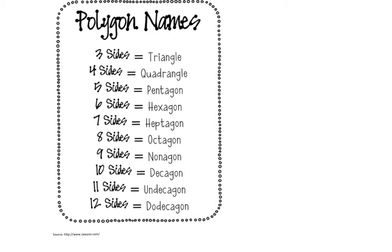Just as a quick review, here are our polygon names based on size — this is just a bit of vocabulary you need to know in order to understand the questions. If you forgot any of them, make sure you have these copied in your notes and go back to study the ones you're unsure of.